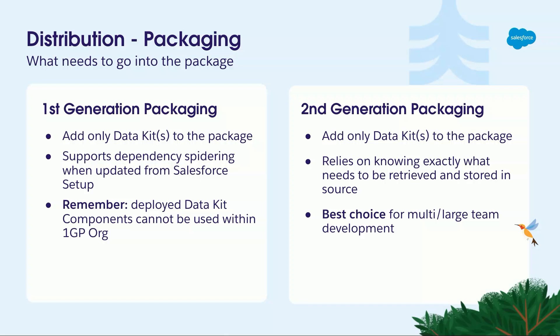For second-generation packaging you need to have a manifest file — those will be soon documented, or you can look them up in the repo. First-generation packaging currently has the additional advantage that it does the dependency spidering for you, so it seems quite attractive currently for standard data kits. Please be aware that deployed data kit components cannot be used within first-generation packaging orgs in a source-driven development way as in the old ISV days.